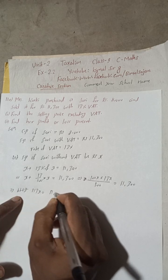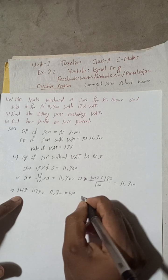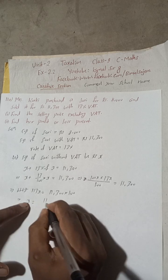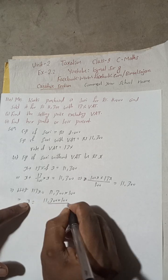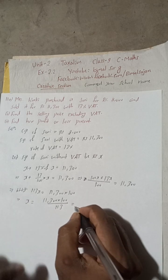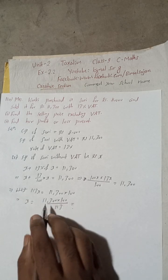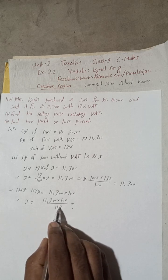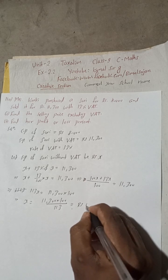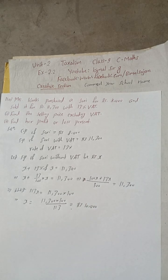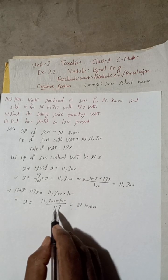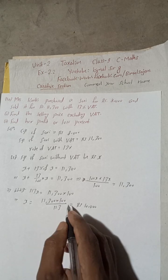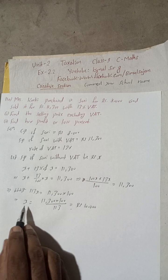This implies x is equal to 11,300 times 100 divided by 113. So when you use calculator and multiply 11,300 times 100 divided by 113, you will get Rs. 10,000. Because 113 and 113, so you'll get 100 times 100, so 10,000.